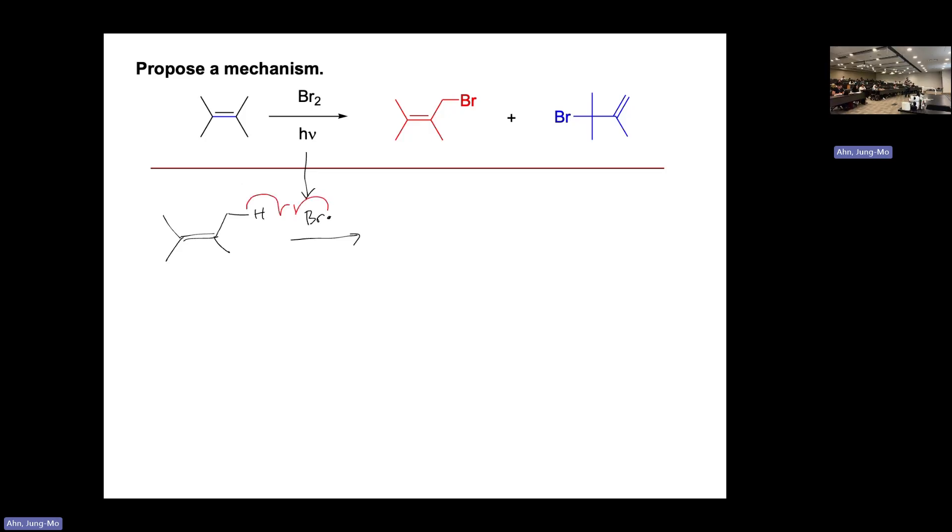Primary radical is not stable, but this is not an ordinary primary radical. This carbon is primary, but it's allylic, right? Next to a double bond. So having a double bond there changes things a lot energetically.